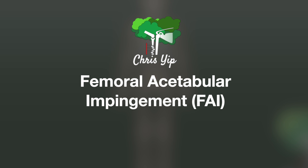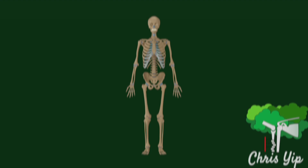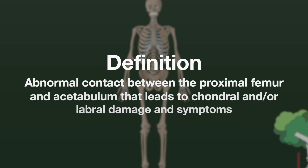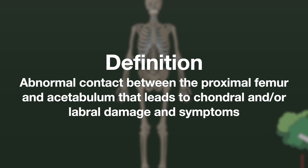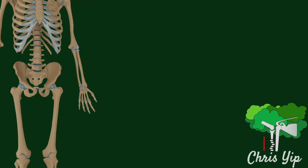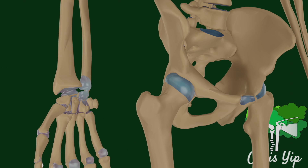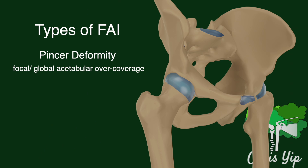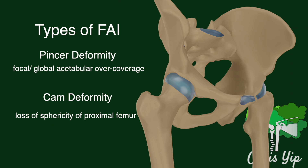Femoral acetabular impingement is due to an abnormal contact between the proximal femur and the acetabulum, which leads to pain and chondral or labral damage. The pathology can present in three different forms: a pincer deformity, a cam deformity, or a combined deformity.